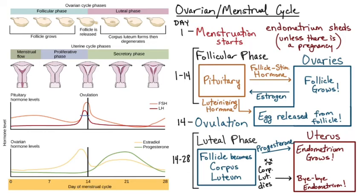If a pregnancy does occur, the fertilized zygote developing into an embryo will release a separate hormone called human chorionic gonadotropin (HCG). That hormone tells the corpus luteum not to die — to stick around and keep making progesterone so there is no menstruation and the embryo can keep growing in the endometrium. But if no pregnancy occurs, the corpus luteum dies and the endometrium is shed.